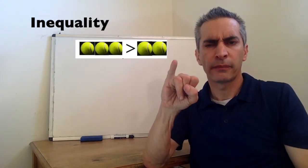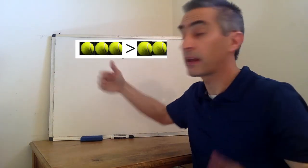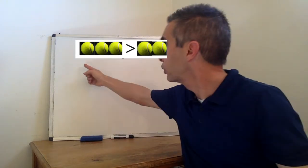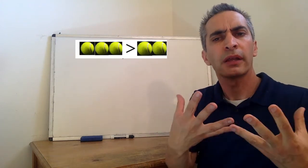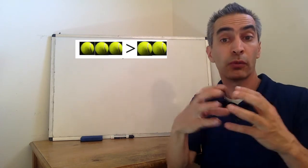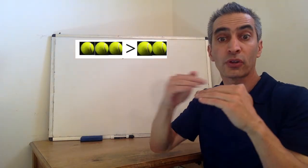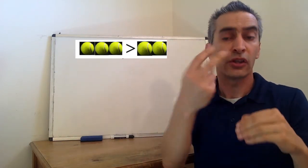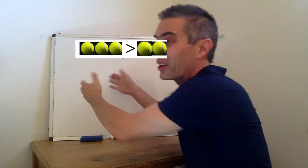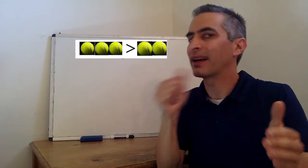Now, what does the term inequality mean? Notice, on the left side, how many balls do you see? Three balls. And on the right side, how many balls are there? Two balls. This amount here on the left is greater than — that's a greater than symbol — than this amount here on the right. Three balls are greater than two balls. This amount is not equal to this amount. What does the word inequality mean? It means not equal.